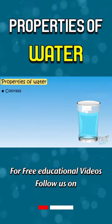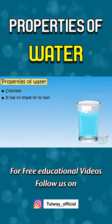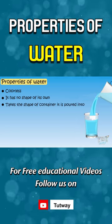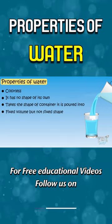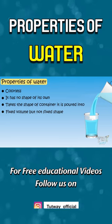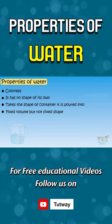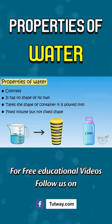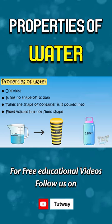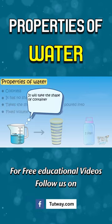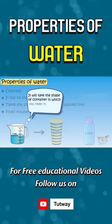Water is colorless and has no shape of its own — it takes the shape of the container it is poured into. Water has a fixed volume but not a fixed shape. For example, if you have 1 liter of water, it will remain 1 liter no matter which container you keep it in. So its volume is fixed, but it will take the shape of the container.